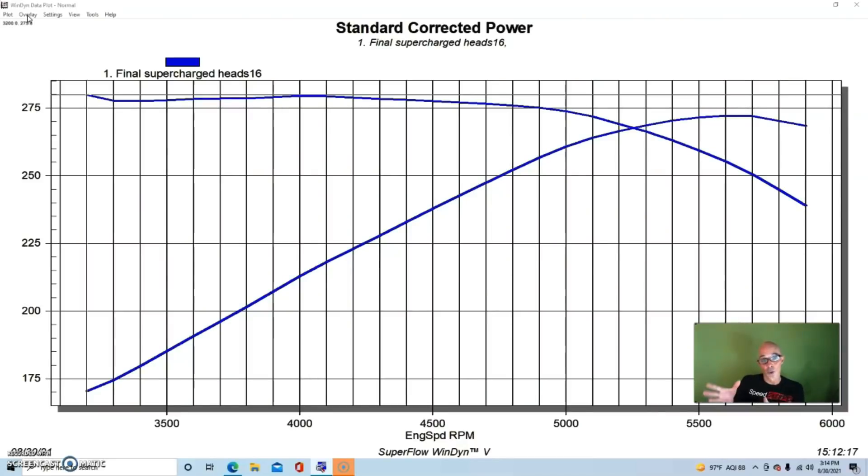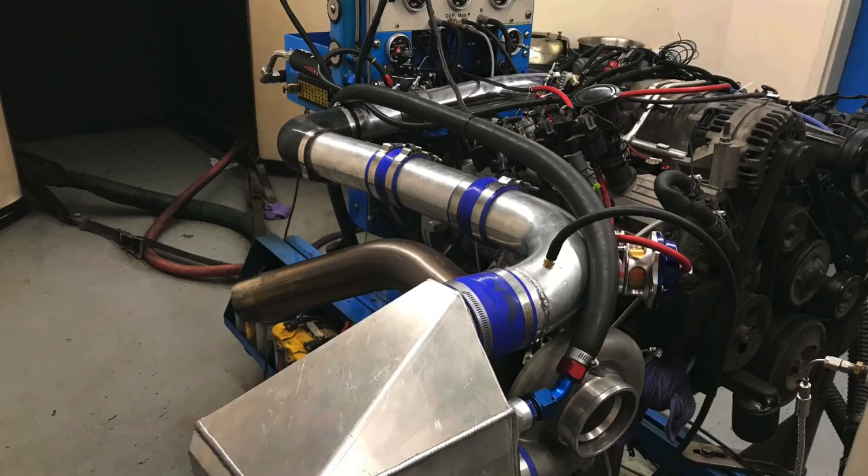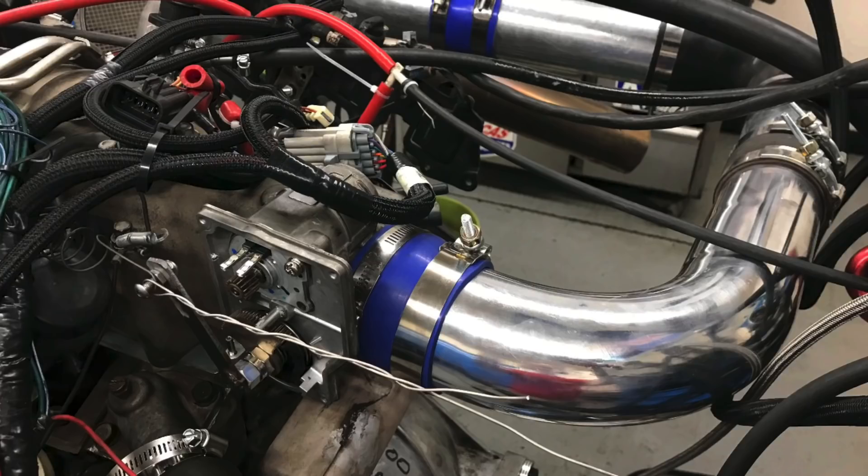We had Troy from Westech weld a drain fitting and we just had a feed fitting for the turbo. All that stuff was very simple to hook up. The thing that took the most time was running the plumbing from the turbo to the intercooler and then over to the inlet of the throttle body into the supercharger.